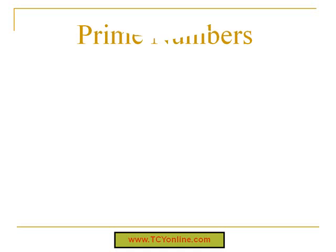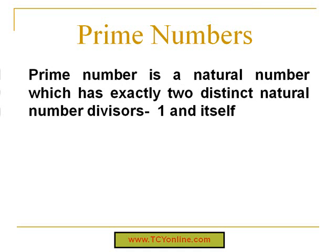But before moving to prime factorization, let's first see what prime numbers are. Prime numbers are basically a natural number which has exactly two natural number divisors — that is, one and itself. That means prime numbers are only divisible by themselves and the number one.